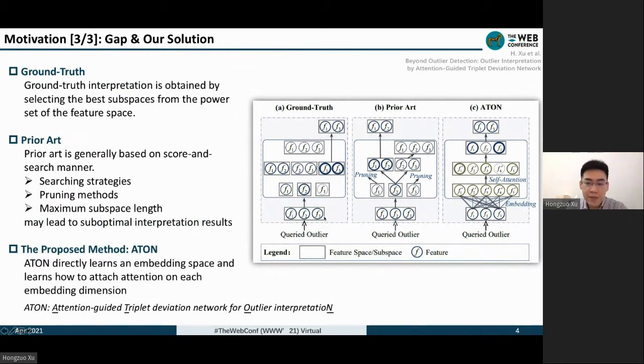In this example, the acquired outlier is initially described by three features: f1, f2, and f3. The acquired outlier obtains the highest outlier score in feature subspace f1, f3, so the interpretation is f1, f3.